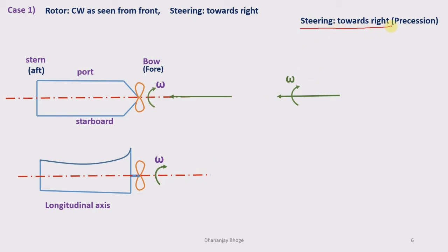The ship is steering towards the right side or starboard side. While steering, the axis of spin or spin vector changes its direction, producing gyroscopic torque. This change in direction of the spin axis is called precession motion. The direction of precession is towards the starboard side, and the speed of steering is called precession speed or precession velocity omega_p.